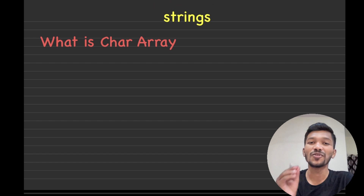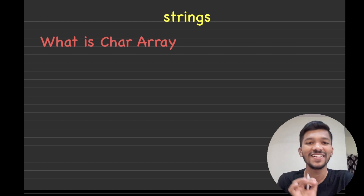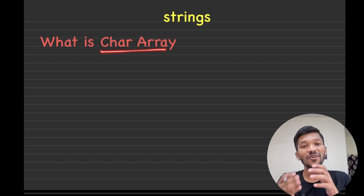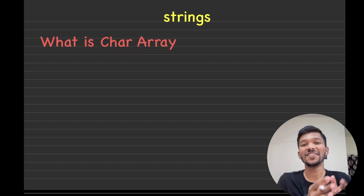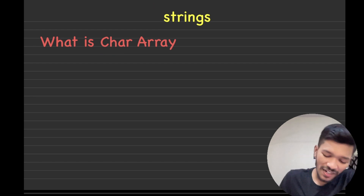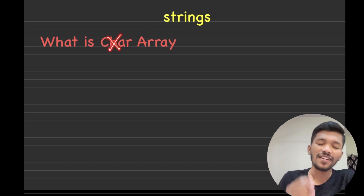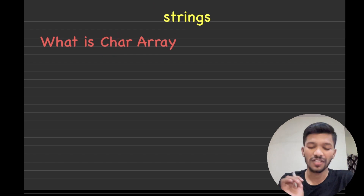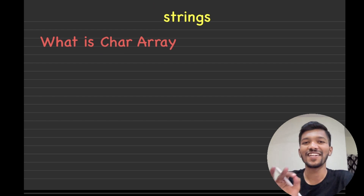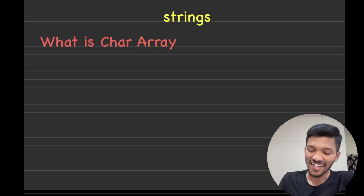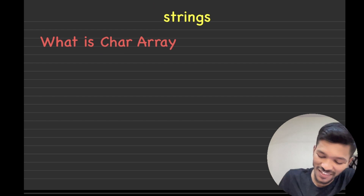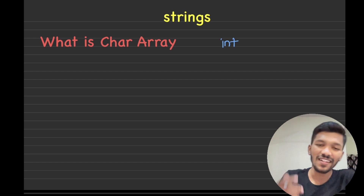But before we move on to strings, the most important thing to note is what are character arrays, because how character arrays differ from strings is important to understand. Now, forget about the character array for a moment — let's first understand what an array is. We have already discussed that arrays are nothing but a collection of elements. In order to declare the array, what we basically do is we simply declare the data type.